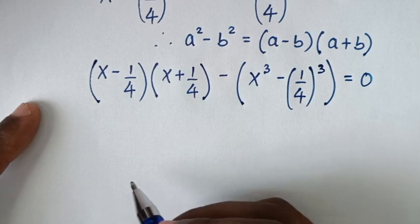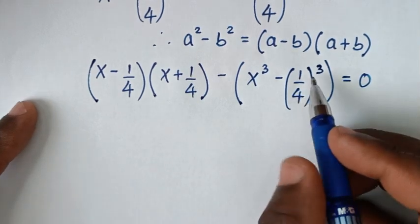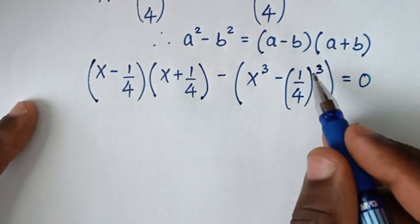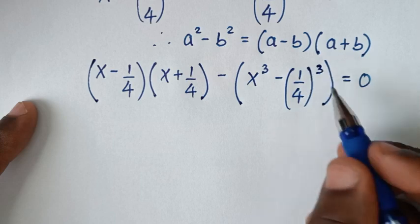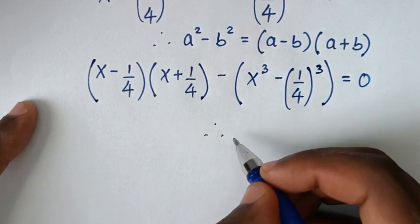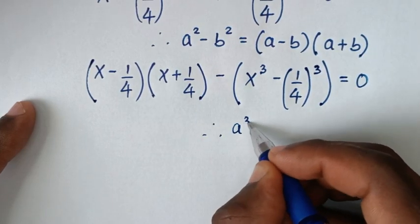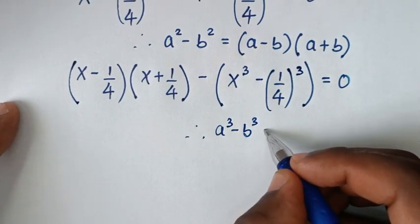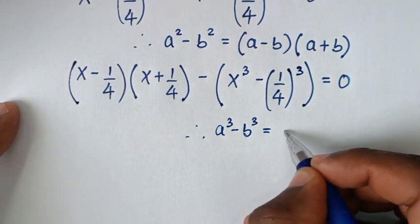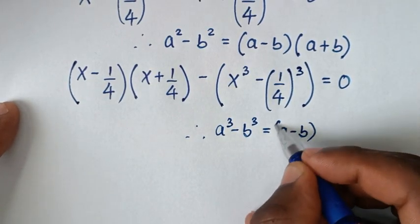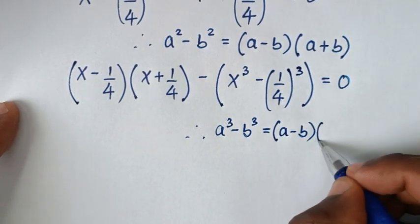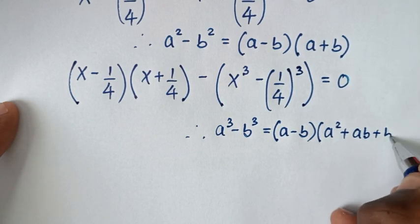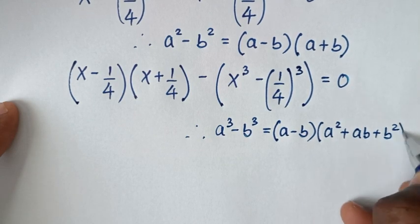Then in the next step, this part is in the form of a perfect cube. Therefore we will apply the perfect cube rule, which is a cubed minus b cubed equals (a minus b)(a squared plus ab plus b squared).